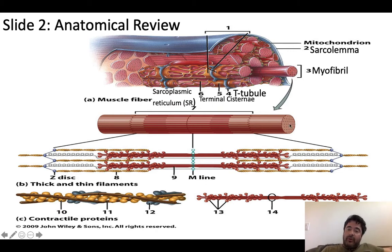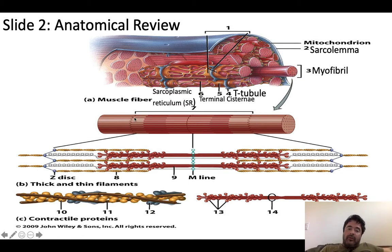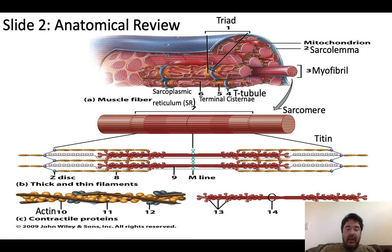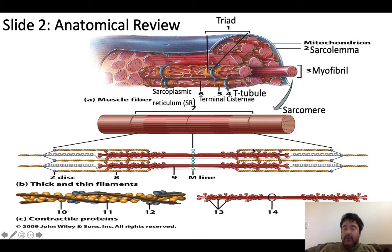When you take myofibrils and chop them into their functional units, those are called sarcomeres. Sarcomeres consist of thick and thin filaments. The sarcomere extends from Z-disc to Z-disc. Projecting directly off the Z-disc is the thin filament, made of actin. There's a protein structure in the middle of each sarcomere called the M-line, and projecting off those M-lines are the thick filaments. The thin and thick filaments overlap one another.